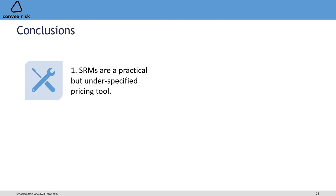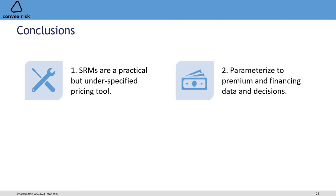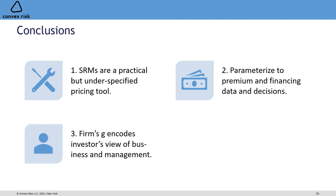In conclusion, spectral risk measures are a wonderful, practical tool — they can be allocated in a very nice way, and when allocation is difficult you understand why: flat spots and ties in the distribution, which any actuary working in this space will have encountered as the order-matters problem. However, they are underspecified as a pricing tool — there's no unique SRM you can parameterize from pricing alone. But you can explicitly quantify a range of reasonable SRMs and overlay insurance premium and financing decisions to make that range as tight as possible. This gives a firm-level g encoding the investors' and management's view of the business.